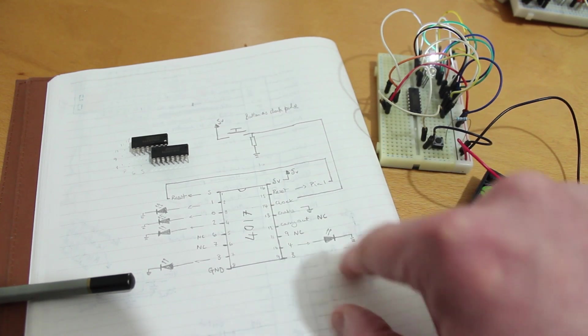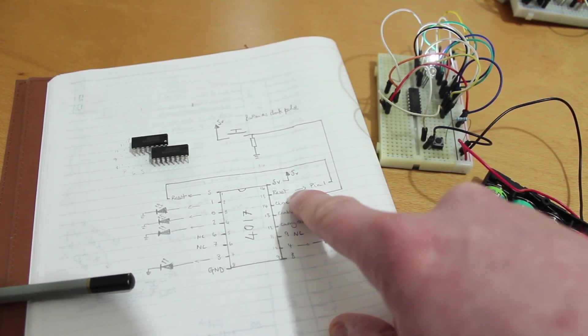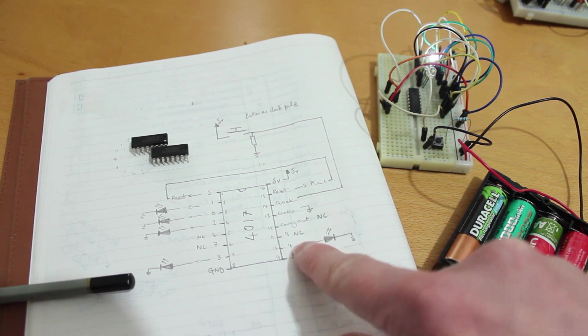And I've got the little diagram here so you can see where you connect five volts, where your reset pin is, where the clock pin is, the enable pin.